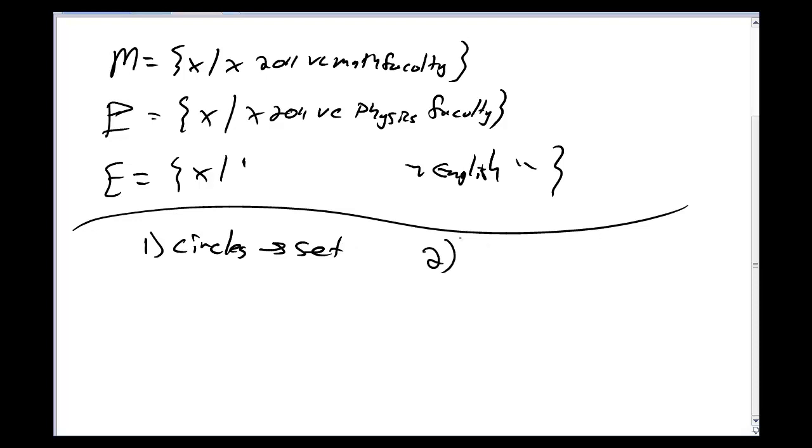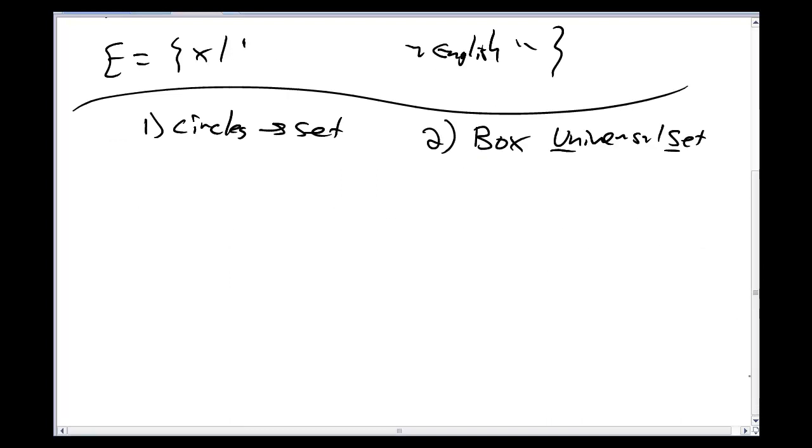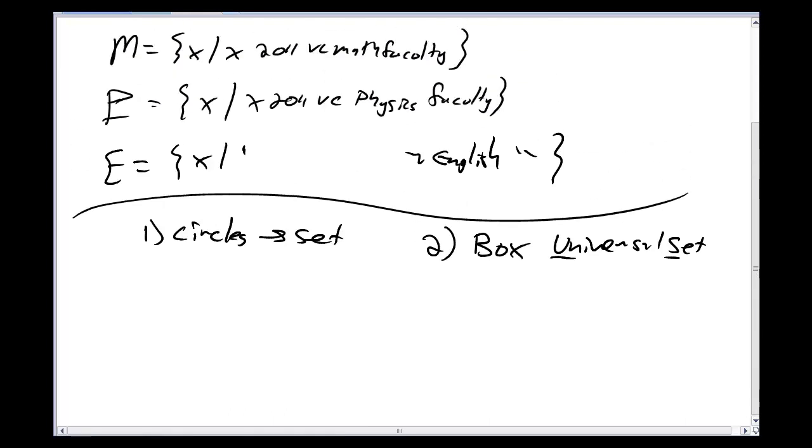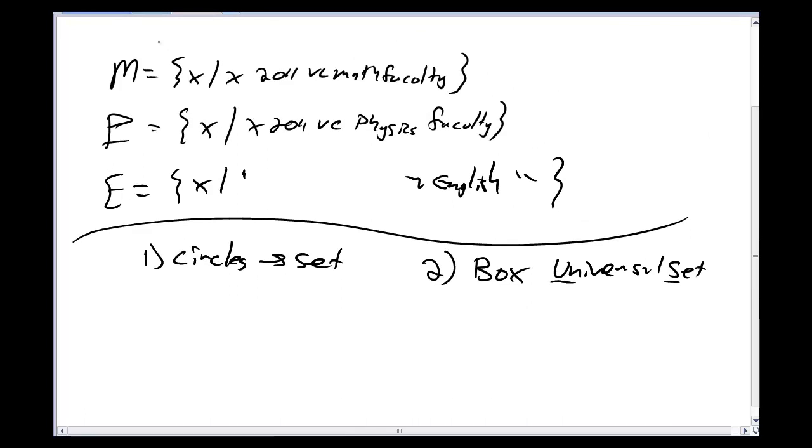And the bigger part of the Venn diagram is a big, large box, and this is called the universal set. Capital U, capital S there. And this universal set, the idea is it has all of the things in our universe in it. This universe does not have to be as big as the universe you and I live in. It just has to be big enough to hold all the things we're talking about.